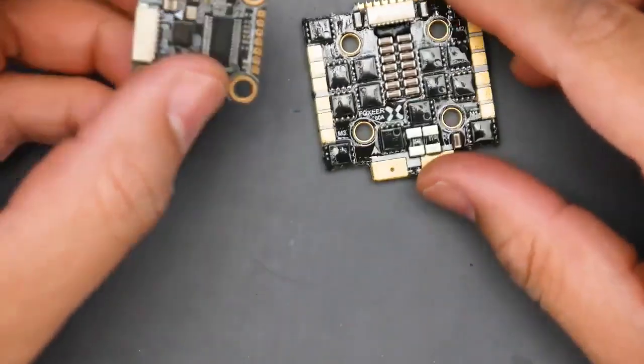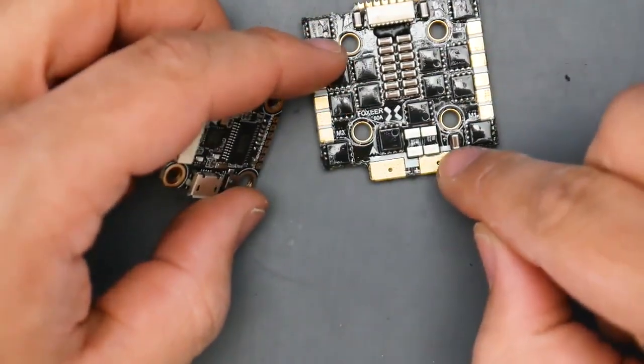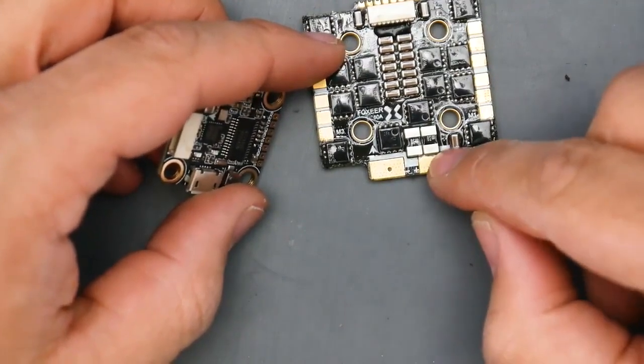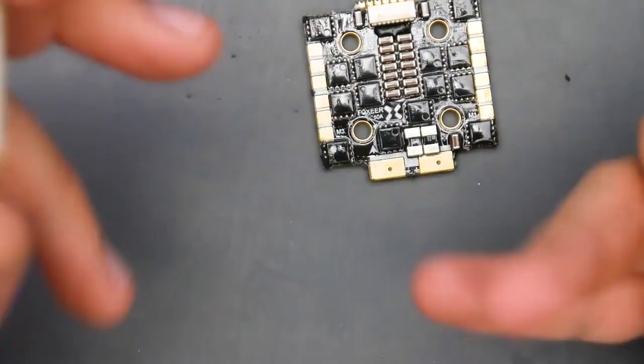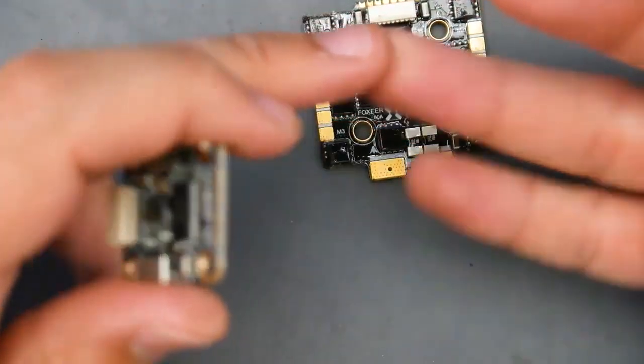you're going to have to go from the ESC—you're going to have to go from this pad right here, actually this one right here—to power up your video transmitter. So you take the red wire here. That's if your video transmitter is a battery voltage video transmitter, and if you're also using the Caddx Vista or the DJI Air Unit.